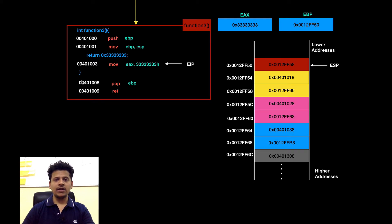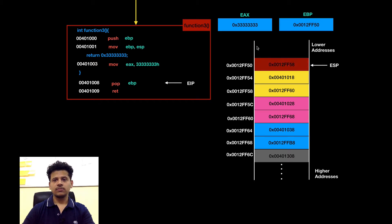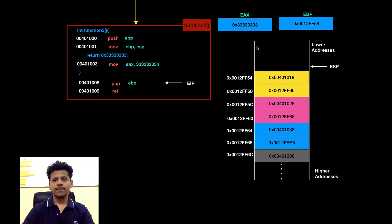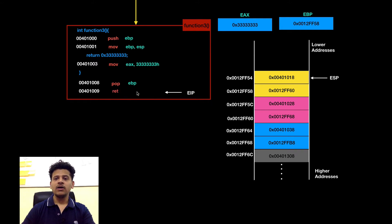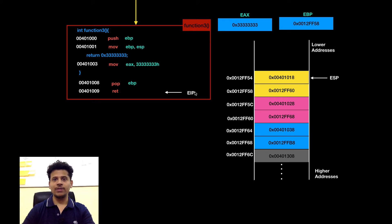Function 3 is ending here. Top of the stack is 0012FF5 — that will get popped into the EBP. Next instruction is return: we will take the address pointed by the ESP, put that into the EIP, and begin our execution from there.